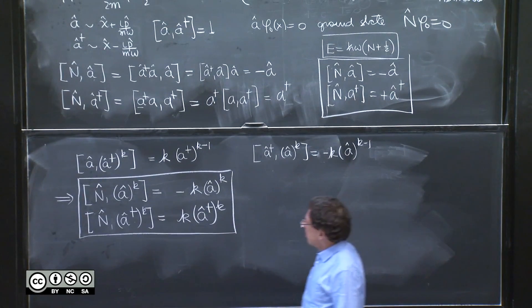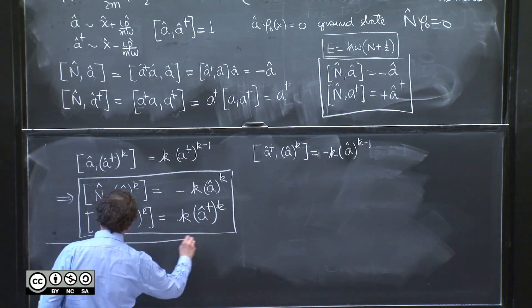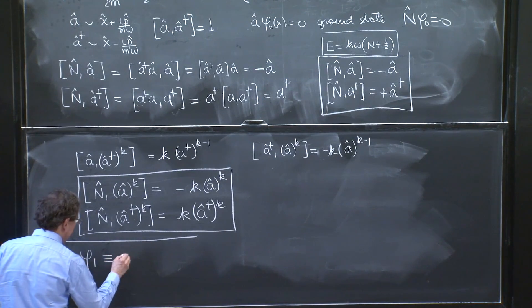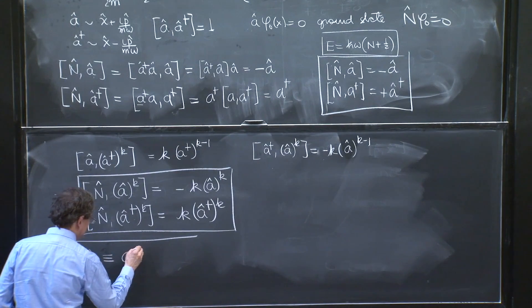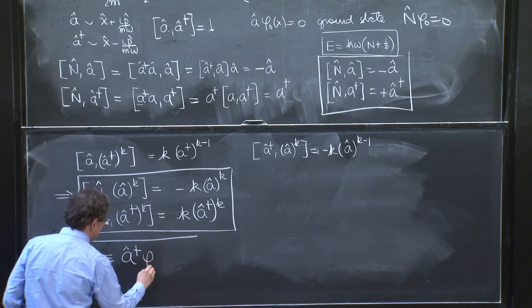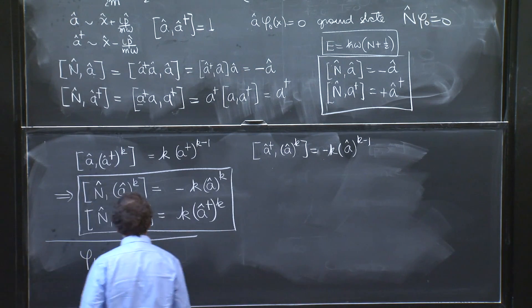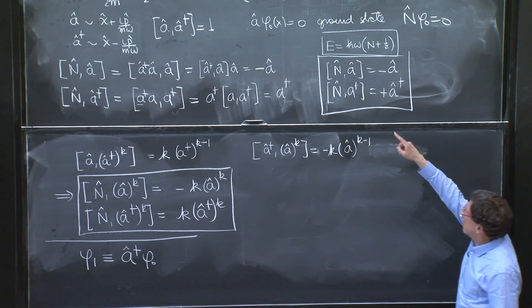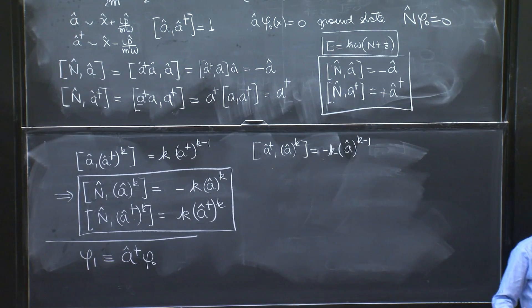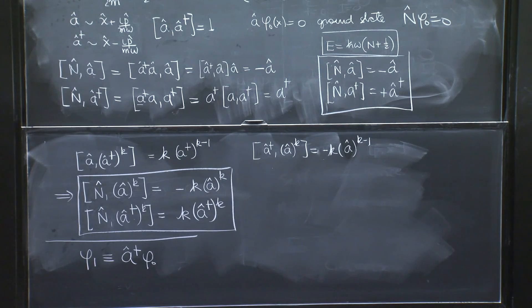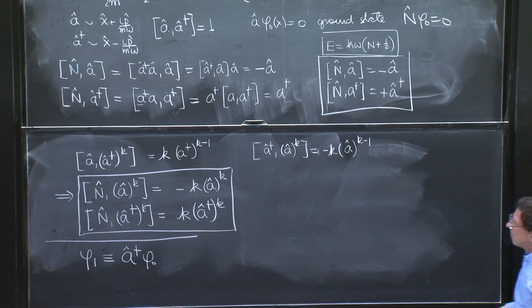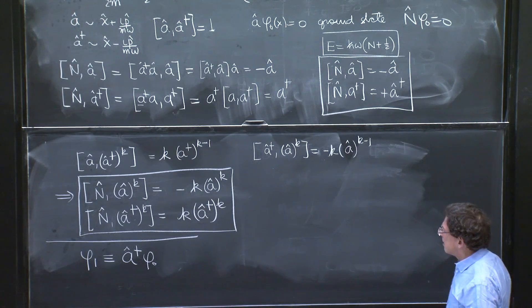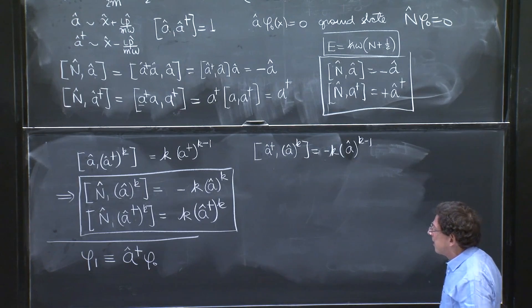Suppose you define now one state called phi_1 as a dagger acting on phi_0. You could not define any interesting state with a acting on phi_0 because a kills phi_0. So you try phi_1 like this. Now you could ask, what energy does it have? Is it an energy eigenstate?